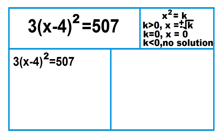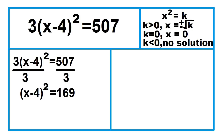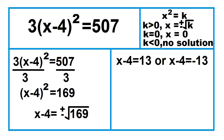Another example. Write in the form x squared equals k by dividing both sides of the equation by 3. The equation becomes the square of the quantity x minus 4 equals 169. Next, apply the square root property: x minus 4 equals positive square root of 169, or x minus 4 equals negative square root of 169. Separate into two equations. To isolate x, add 4 to both sides of each equation. The answer is x equals 17 or x equals negative 9.